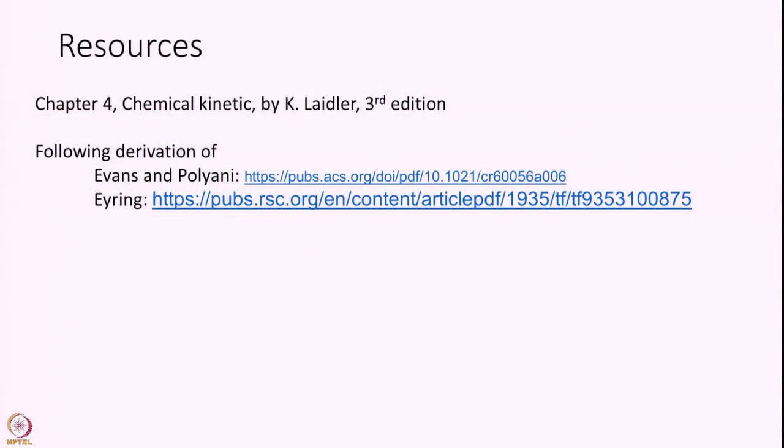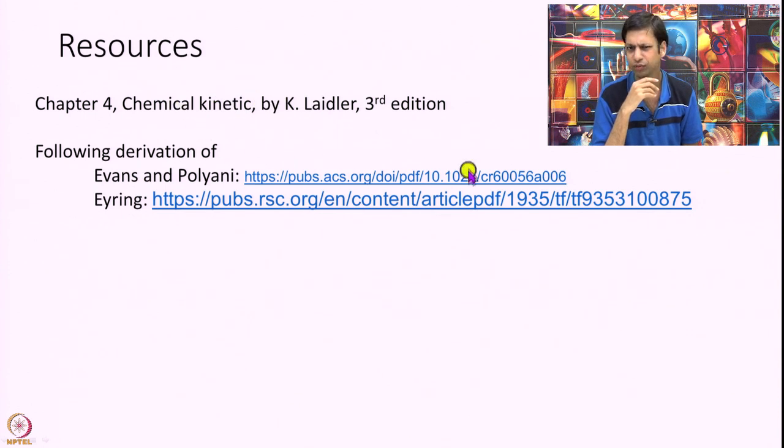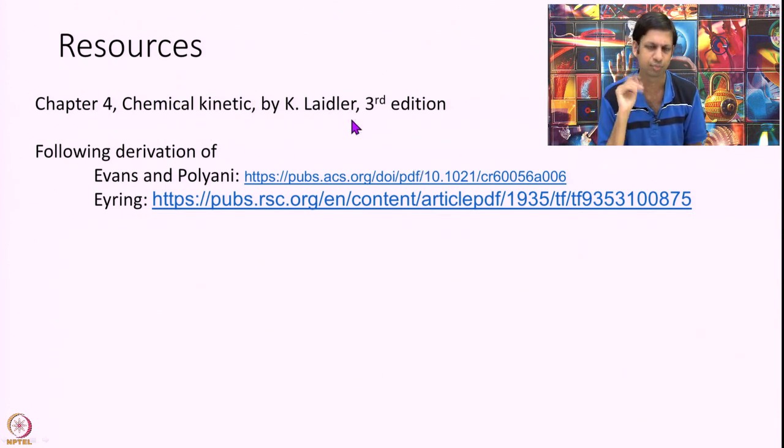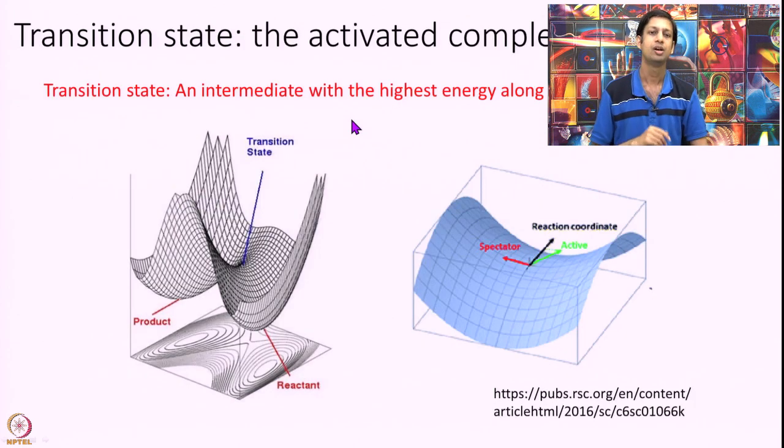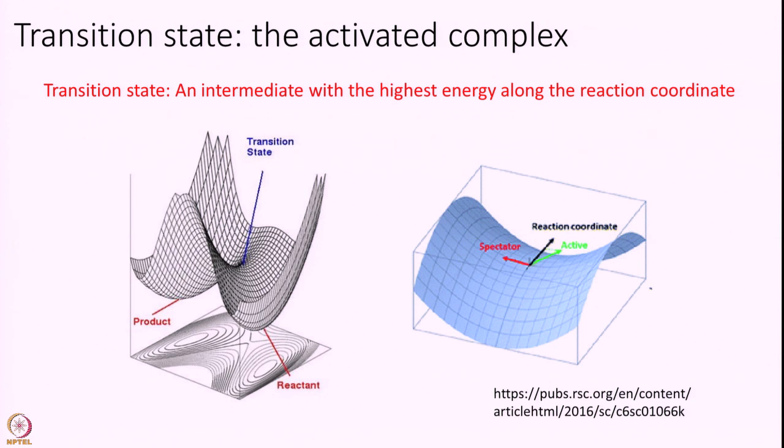What we are following is the book by Laidler, chapter 4 of the third edition. In a different edition you will find this in a different chapter number. Transition state is an activated complex in the language of Arrhenius. Transition state is an intermediate with the highest energy along the reaction coordinate.